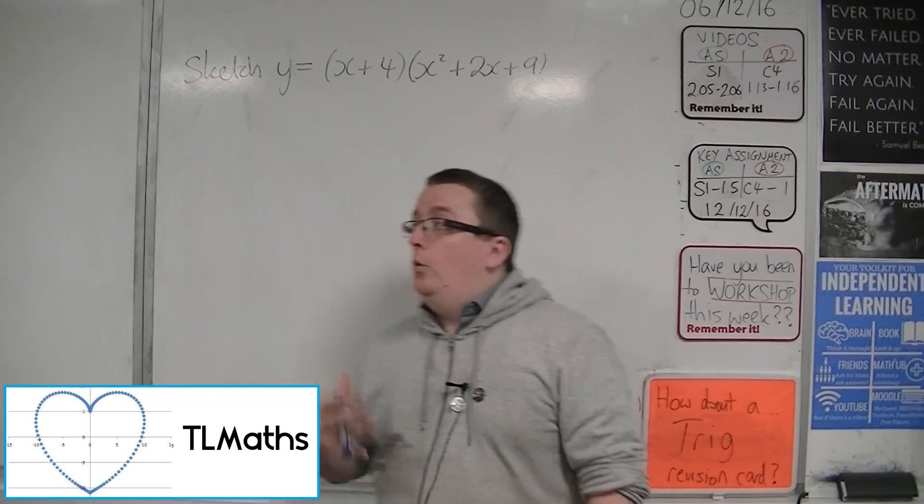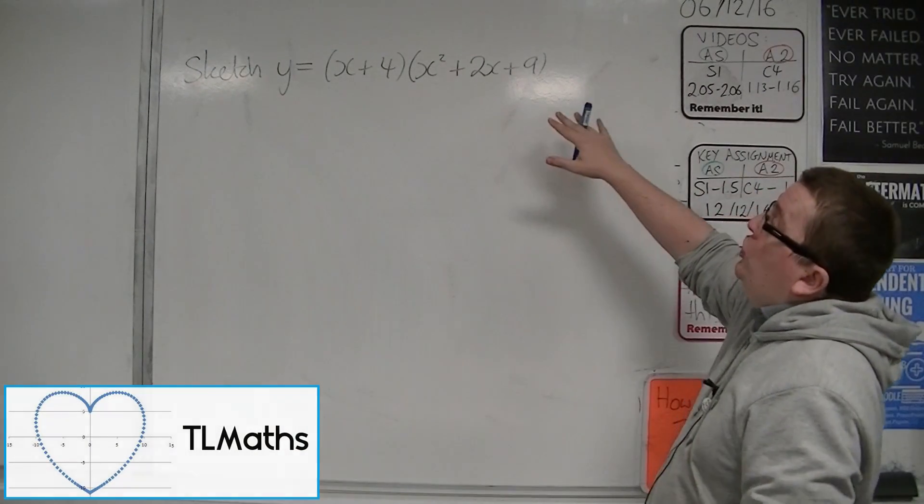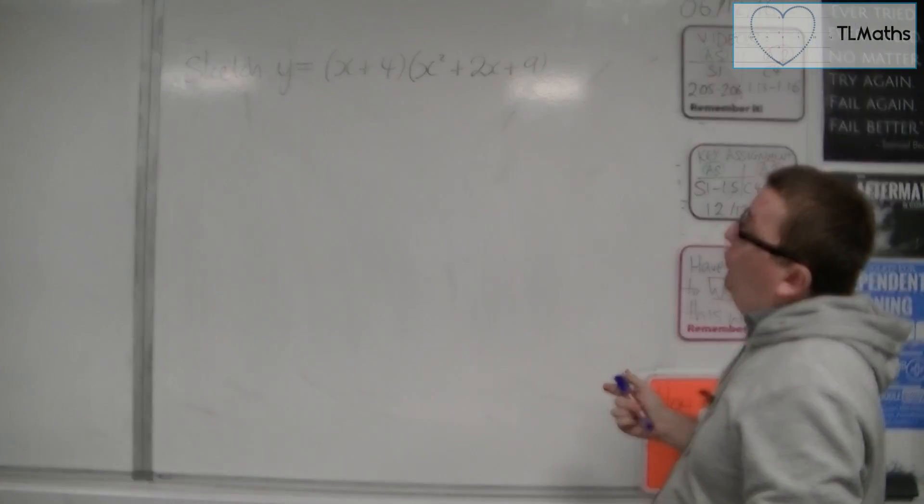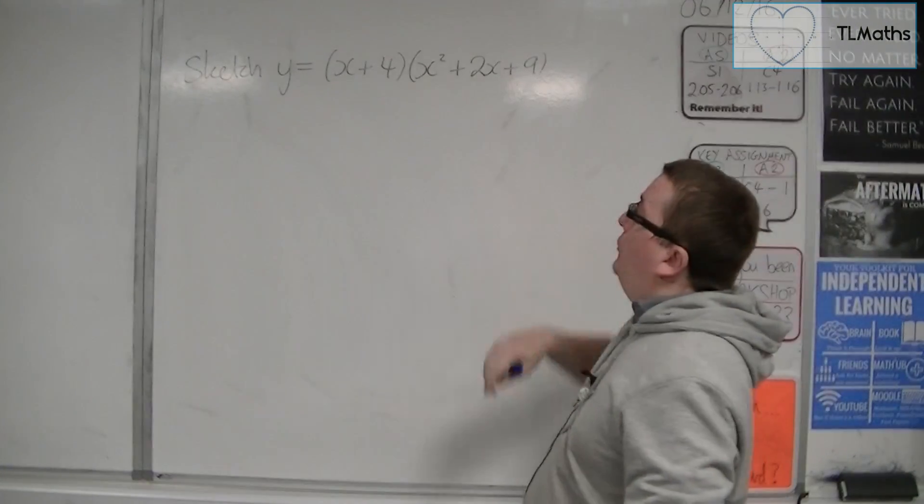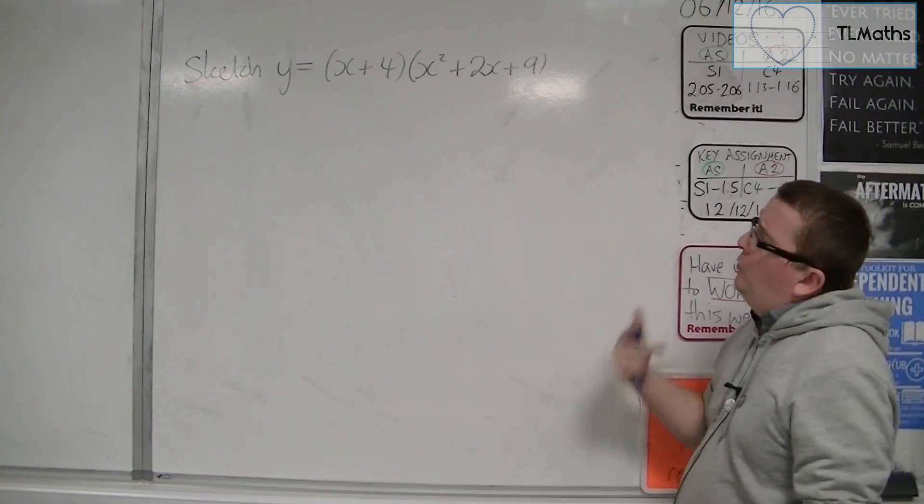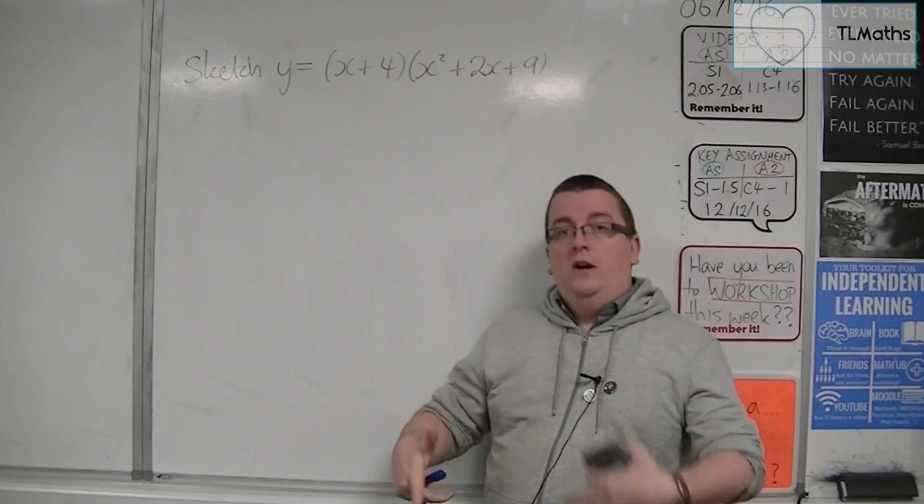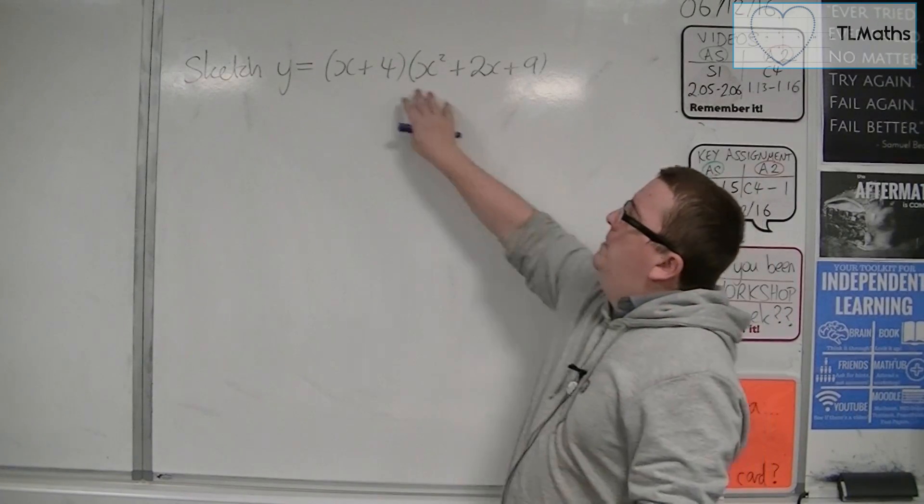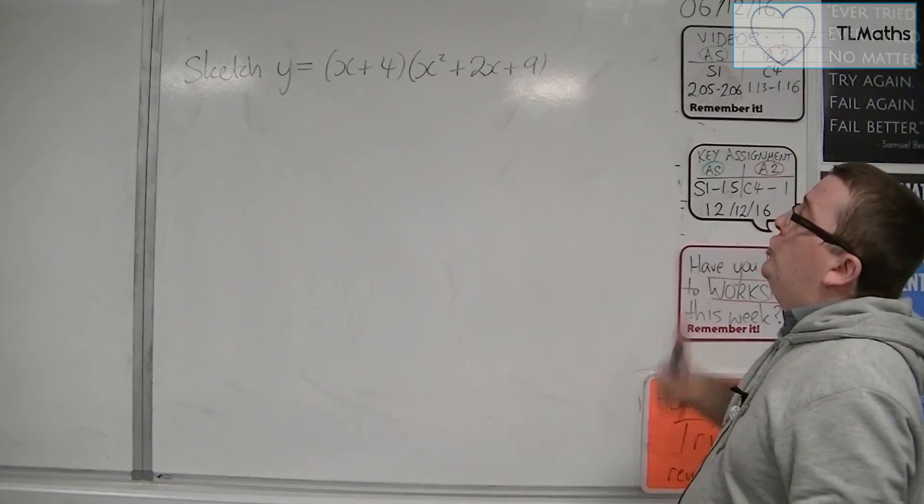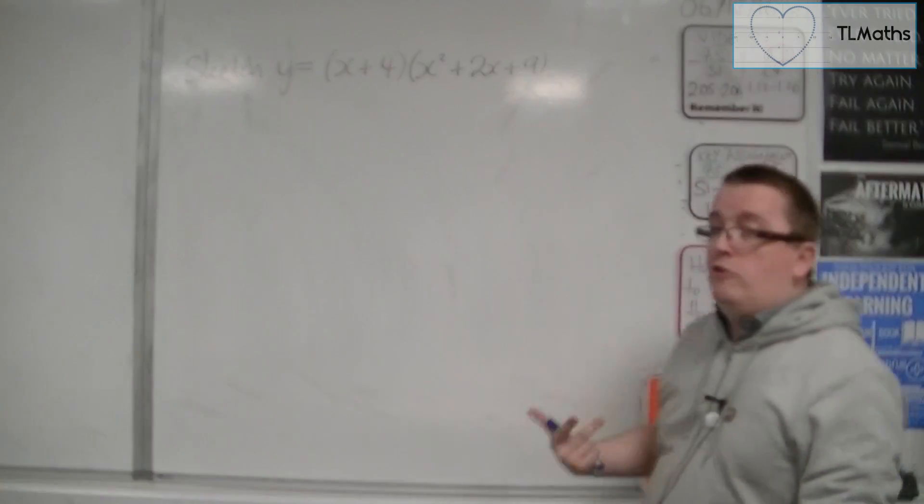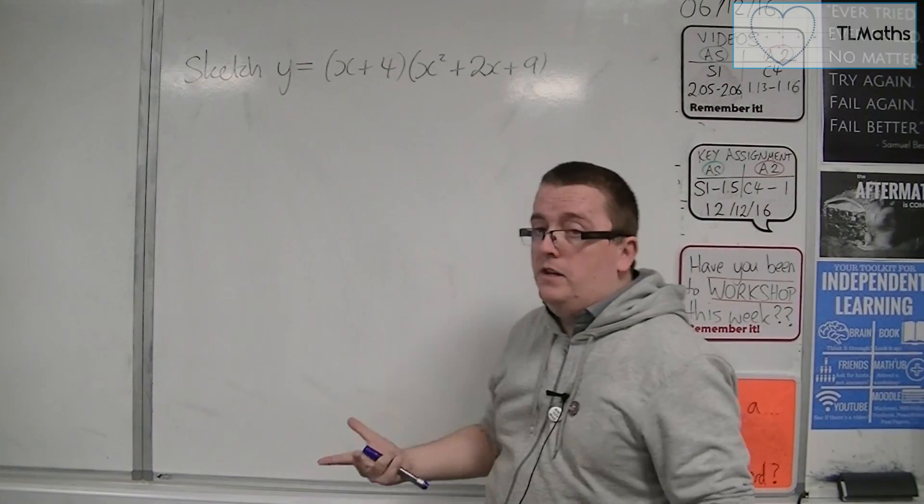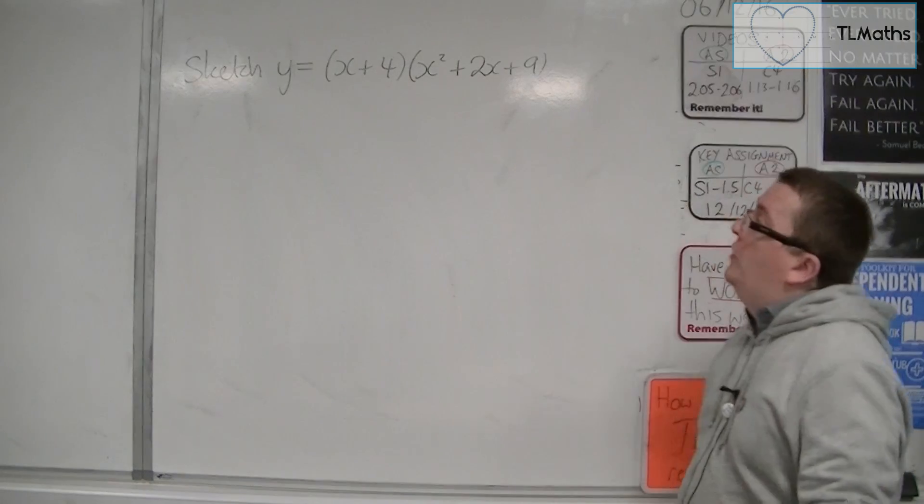In this video, I want to go through sketching a curve that looks like this: y equals (x plus 4) times (x squared plus 2x plus 9). We have skills by this point that will be telling us it's going to be crossing through minus 4 on the x-axis. I should also be able to work out where it crosses the y-axis, because that's through multiplying the 4 by the 9, so it's going to go through 36.